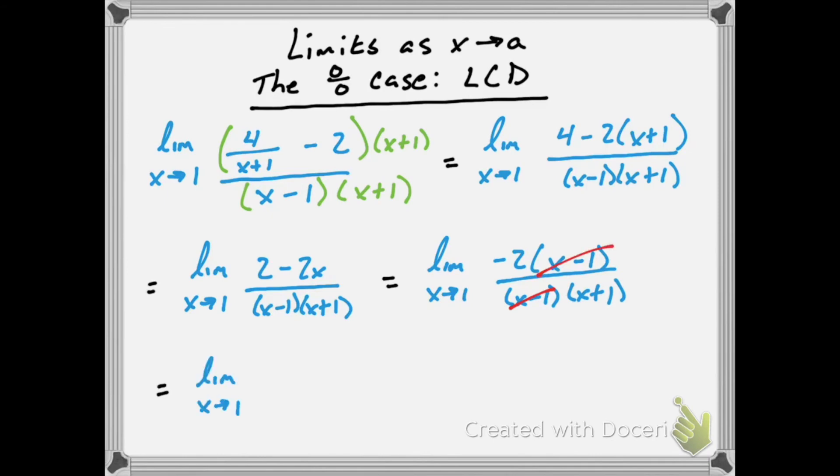Giving us the limit as x approaches 1, of negative 2 over x plus 1. And finally, we can plug back in 1, which will give us a limit of negative 2 over 2, which reduces to negative 1.